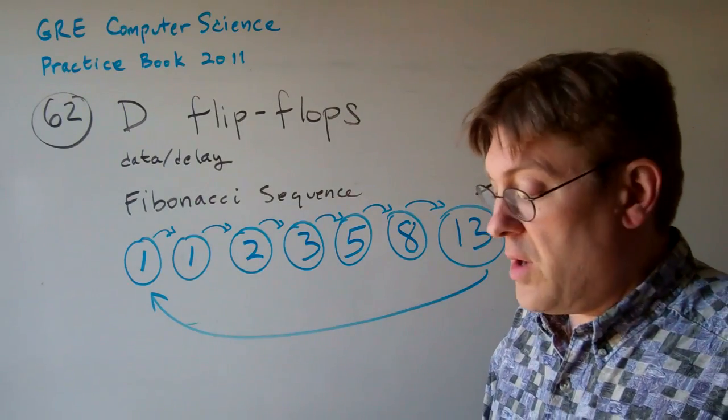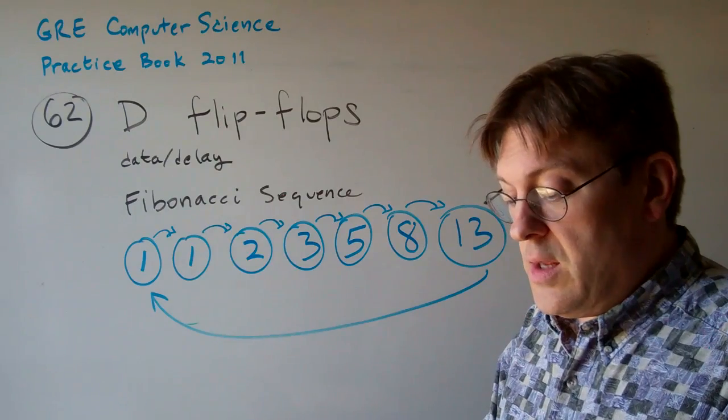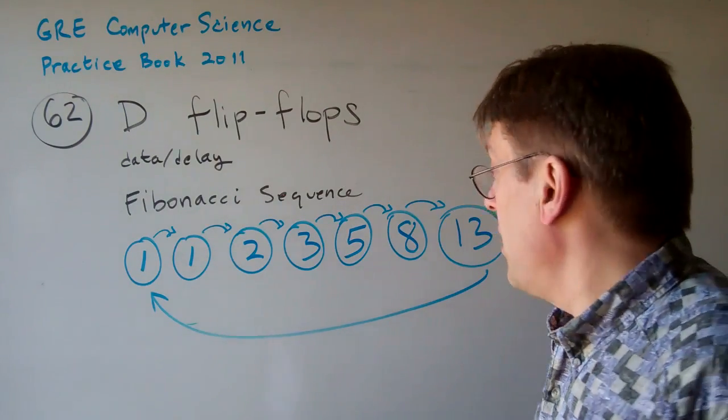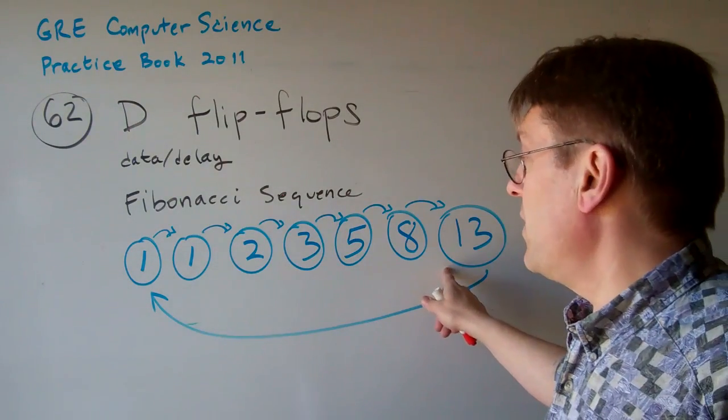Basically, these are binary type of tools here. So you're going to need 2 to the n, where n is the number of states. You don't have to necessarily use the actual number to identify the state.